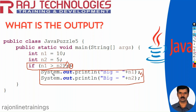Since those statements are not part of the if condition, whether the condition is true or false, those statements will get executed. So the output of this program is big equal to 10 and big equal to 5.